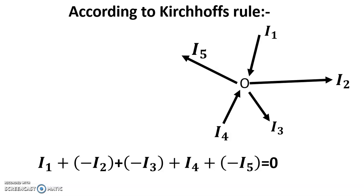Likewise, currents I1 and I4 flowing towards the point O are positive, while the currents I2, I3 and I5 are negative. Therefore, according to Kirchhoff's first law, I1 minus I2 minus I3 plus I4 minus I5 equals zero.